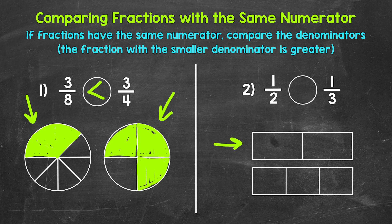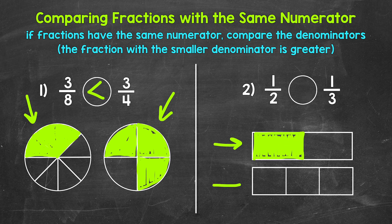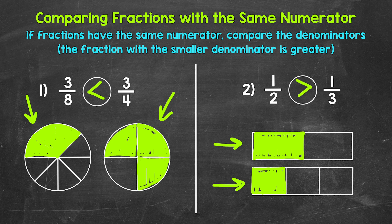Let's show that with these models. We'll start with one half — we need to shade in one of the two parts, so one. And then one third — one part out of the three. We can see that one half is greater; more of the whole is shaded in. So our comparison symbol goes like this, and we can read the comparison from left to right as one half is greater than one third.